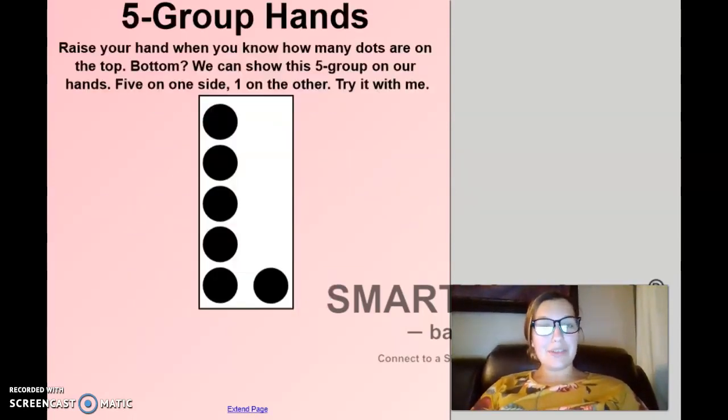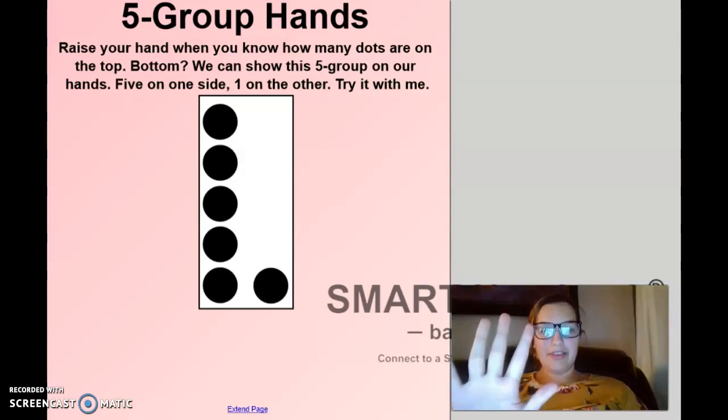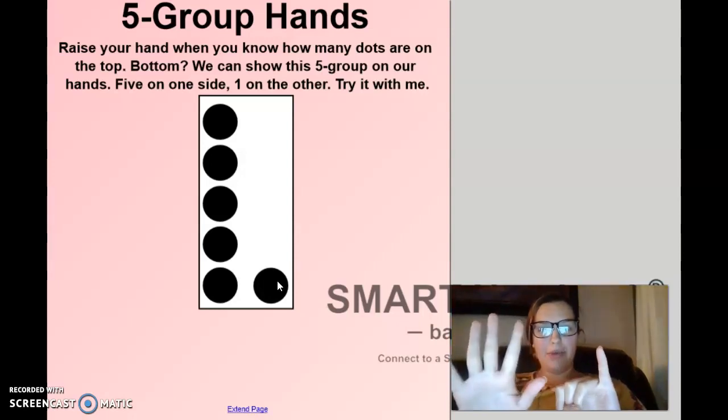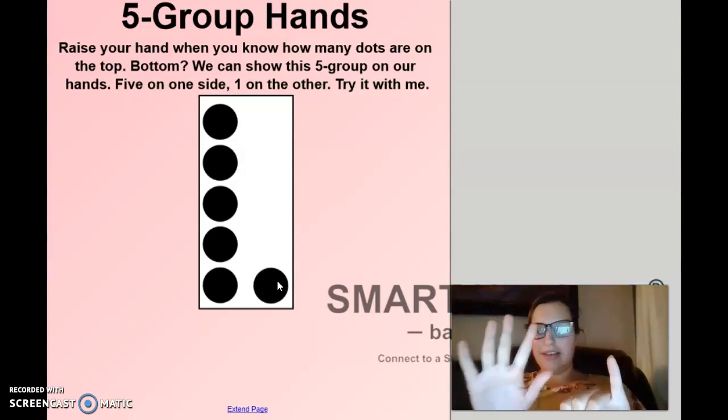We're going to start off our lesson with some five group hands. I want you to put out five. And then how many are over here? One. Five on one side, one on the other. So we have five and then six.